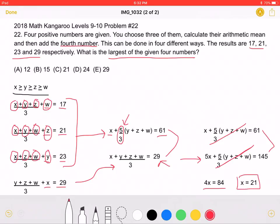Having solved for our X, which is the largest of the four given numbers, we have gotten our answer, which is C, 21.